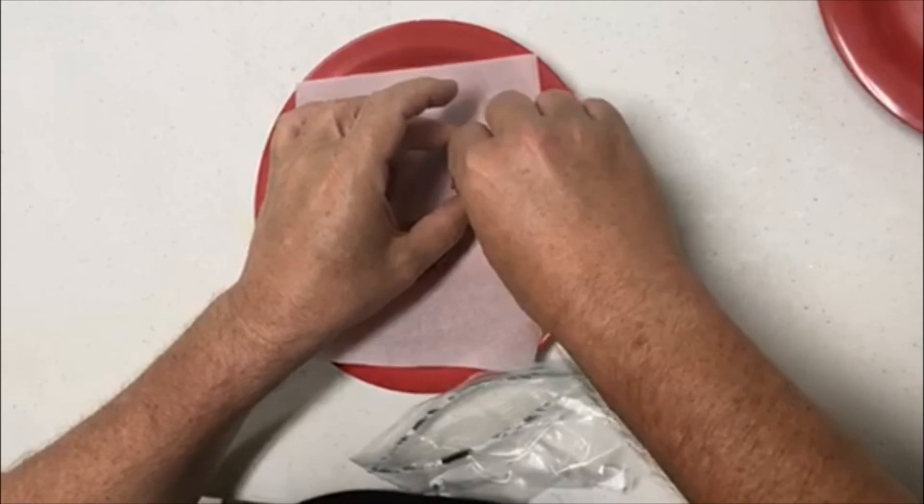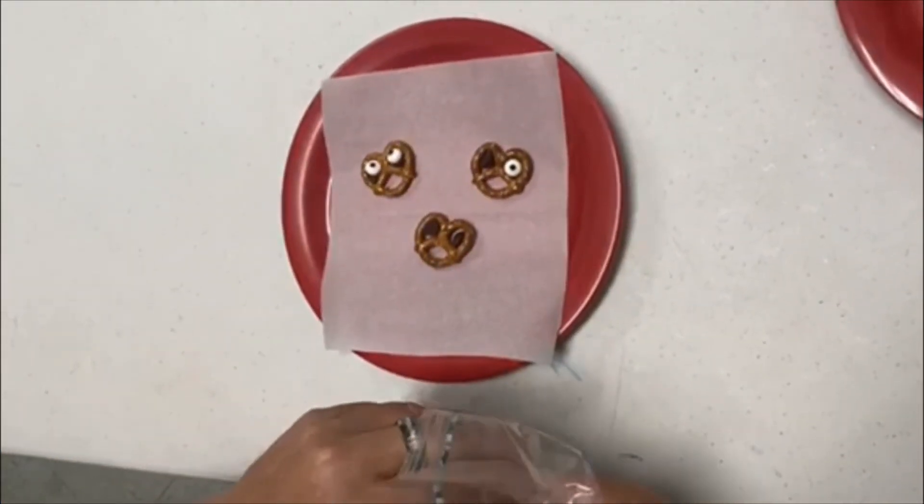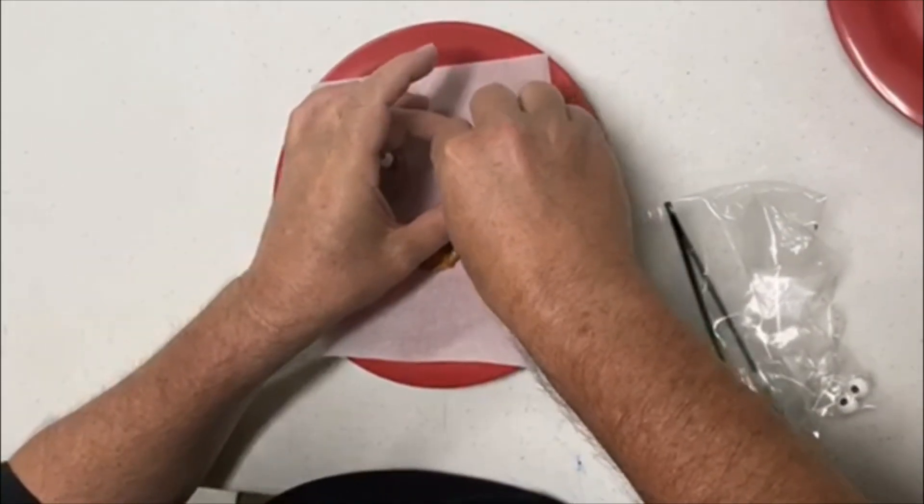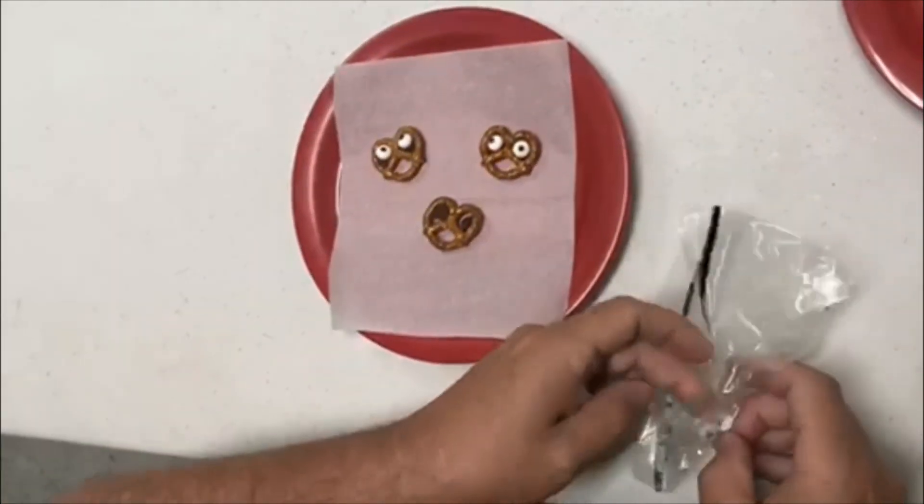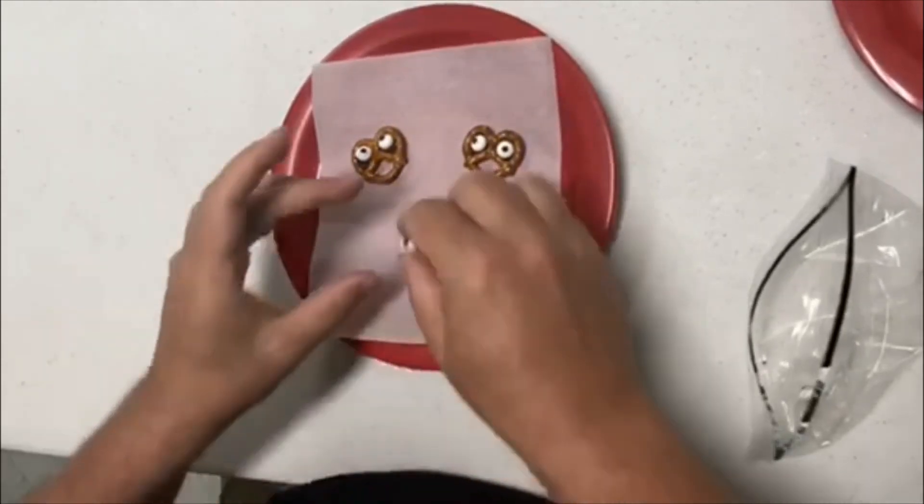This is eyeball glue and it's okay that it smashes on the bottom. That's why it's on the parchment paper so that it doesn't stick. Stick that one in there. You can see it kind of squish out.